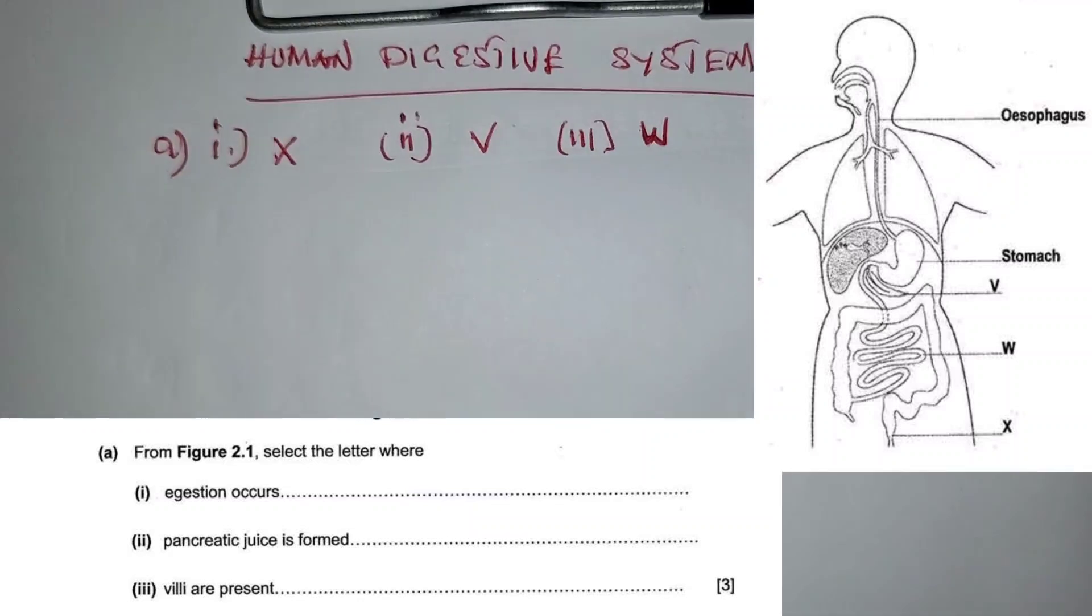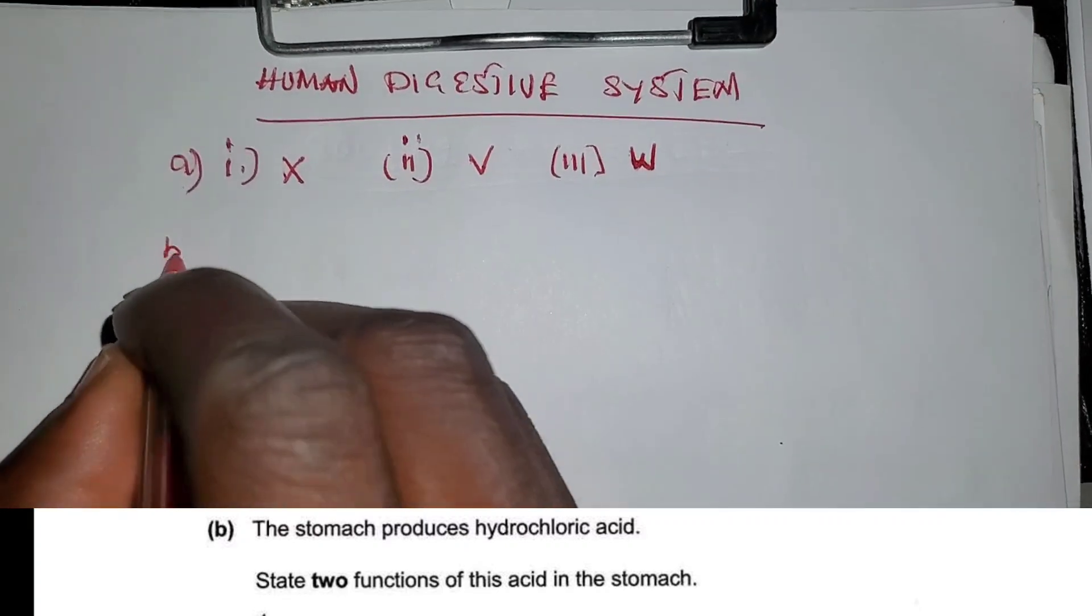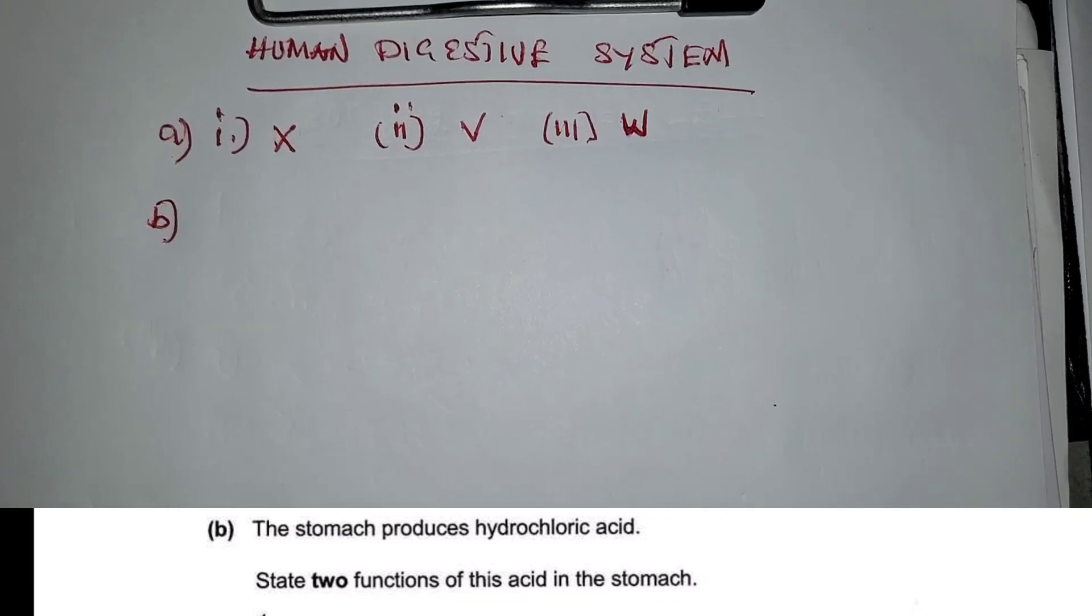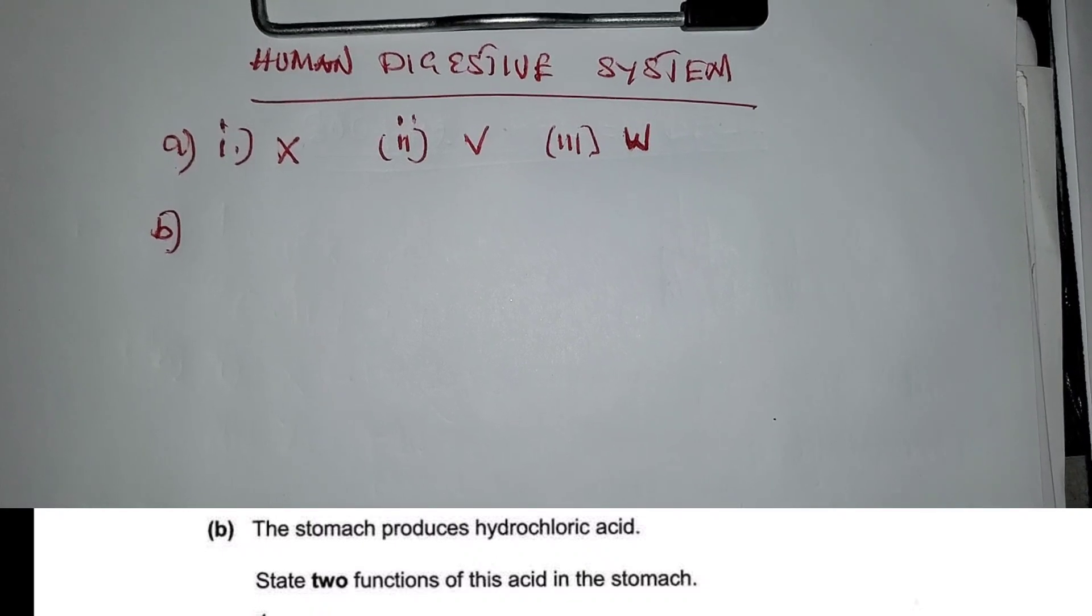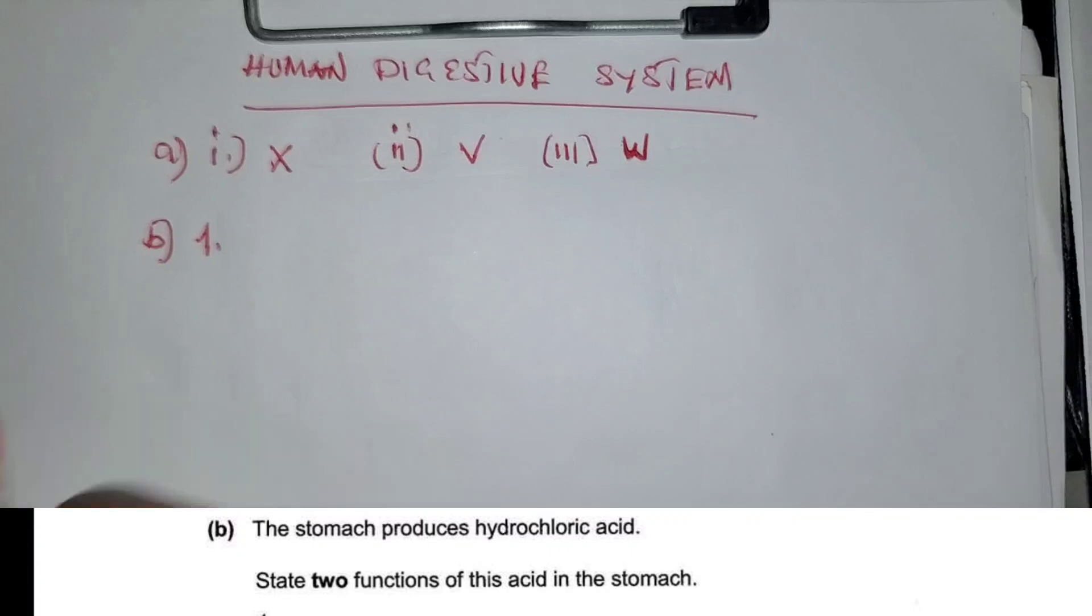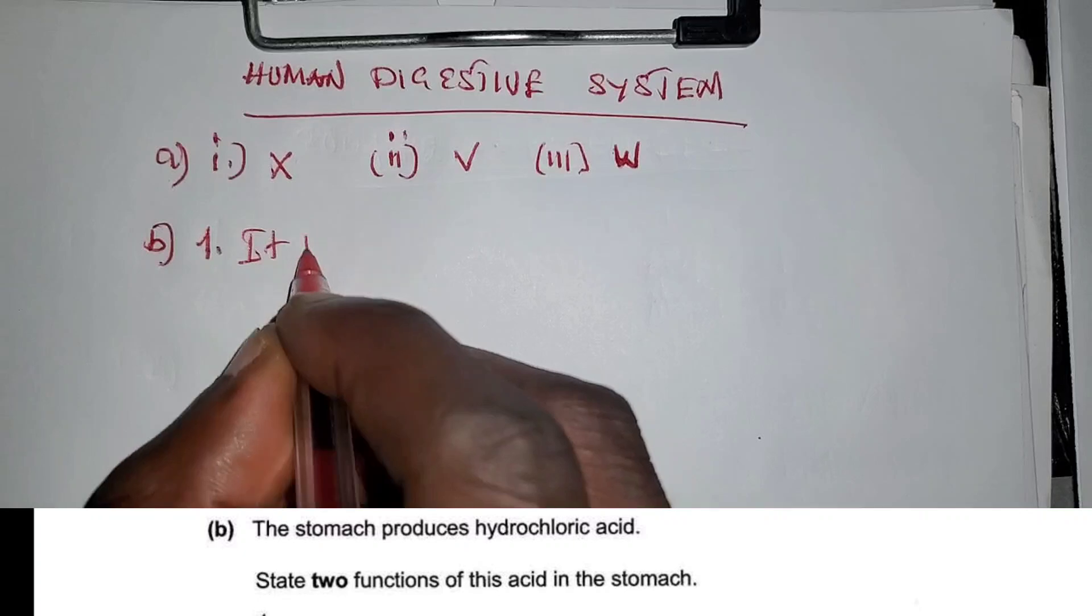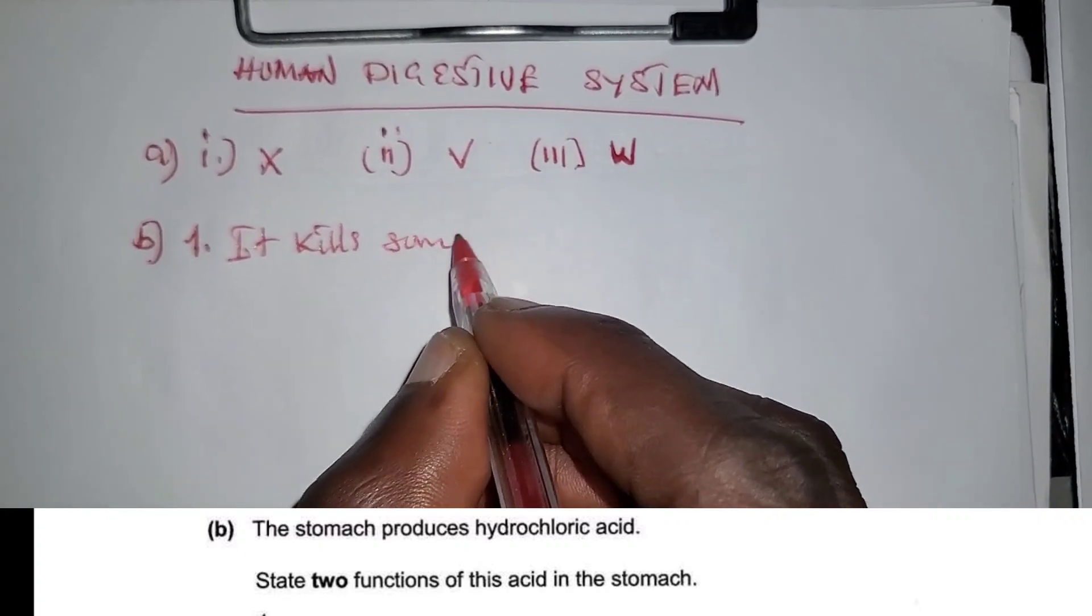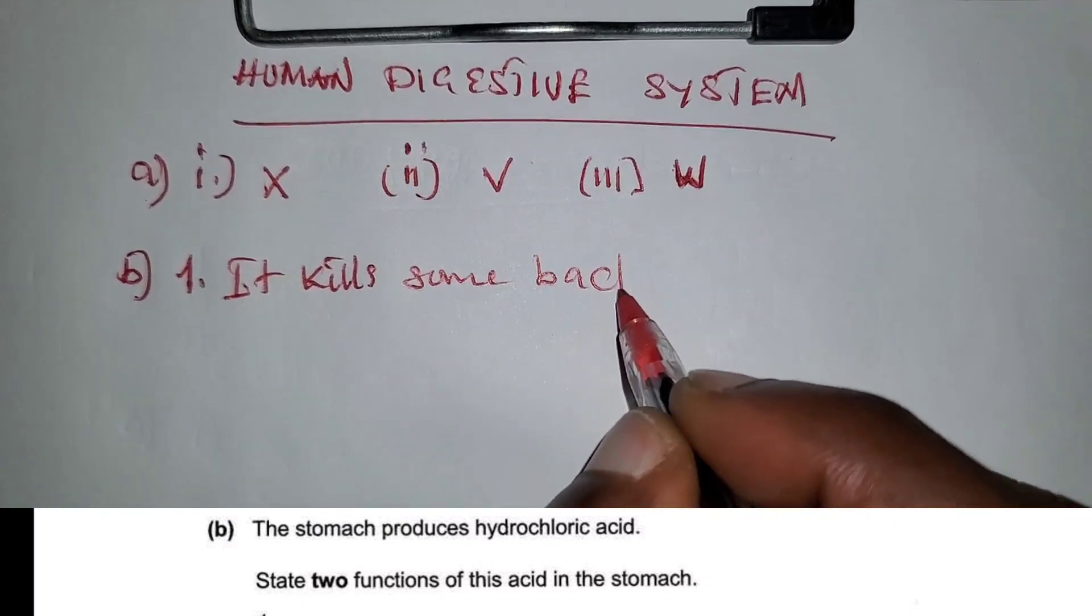Let's go to question B. Question B is saying the stomach produces hydrochloric acid. Yes, we know this. State two functions of this acid in the stomach. Number one, you can say it kills some bacteria that comes along with the bolus.